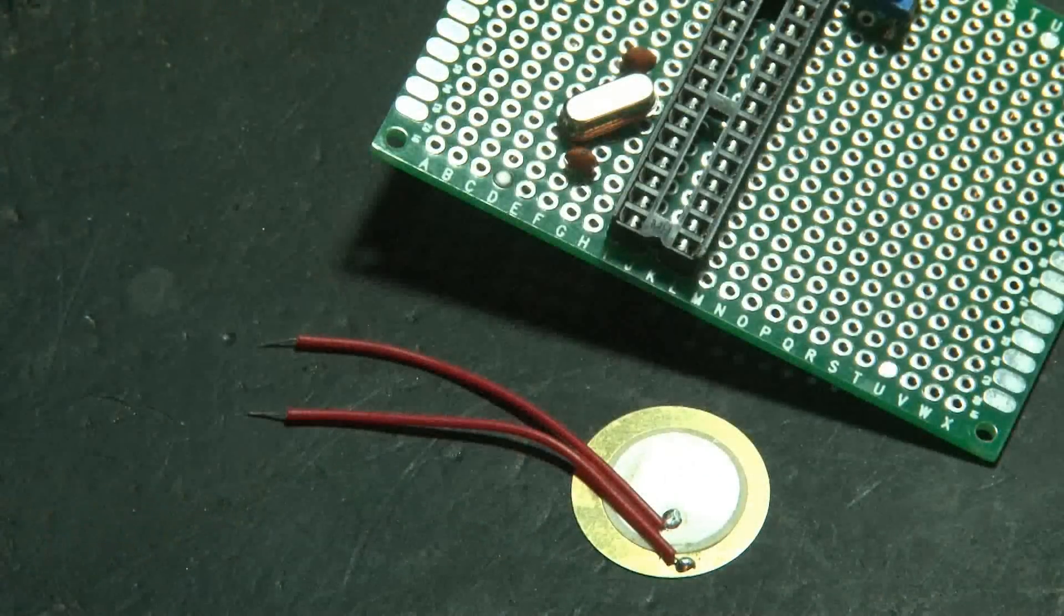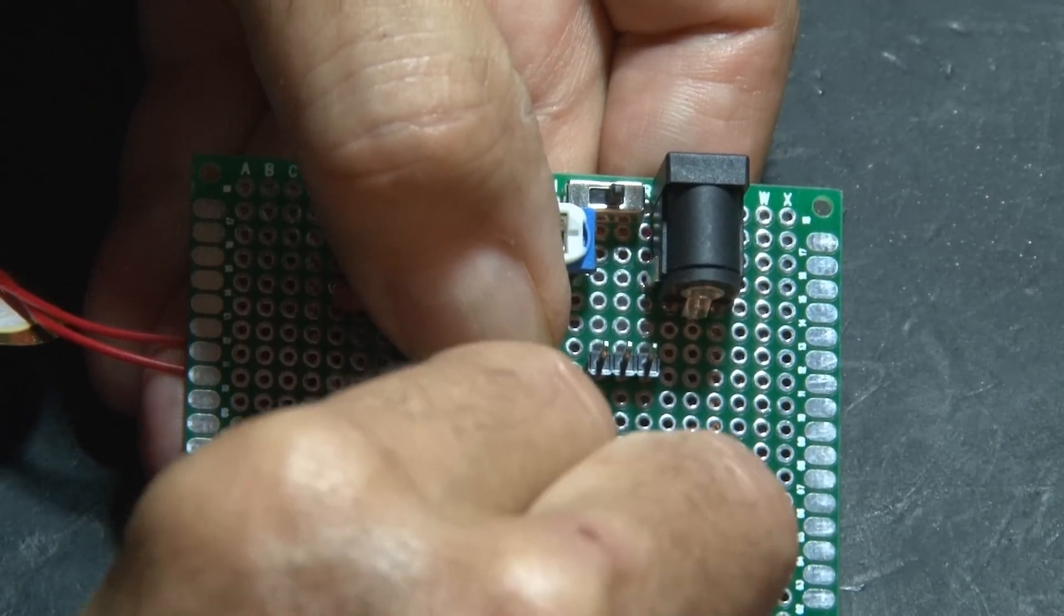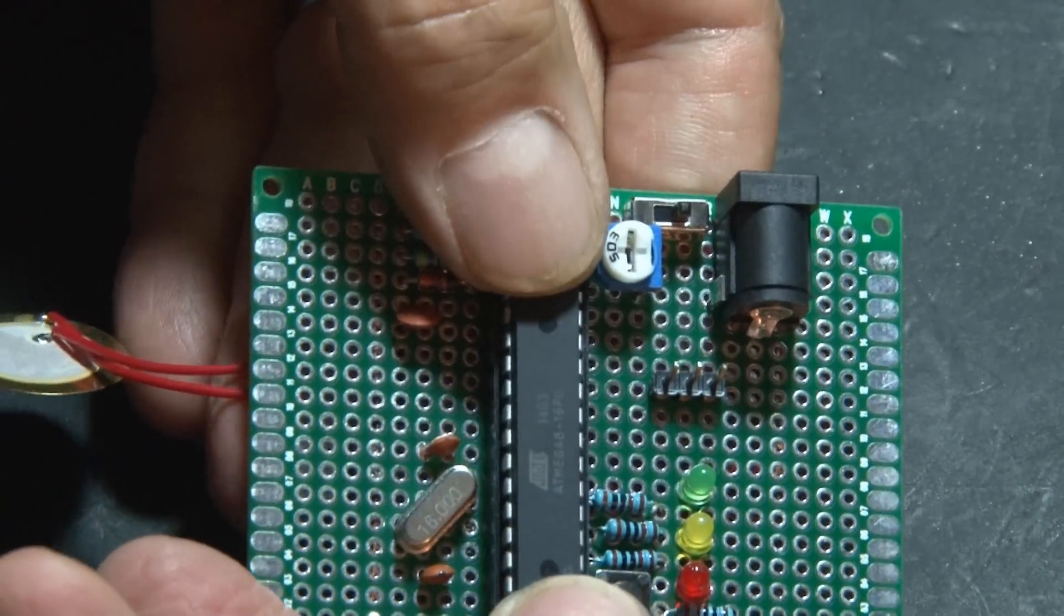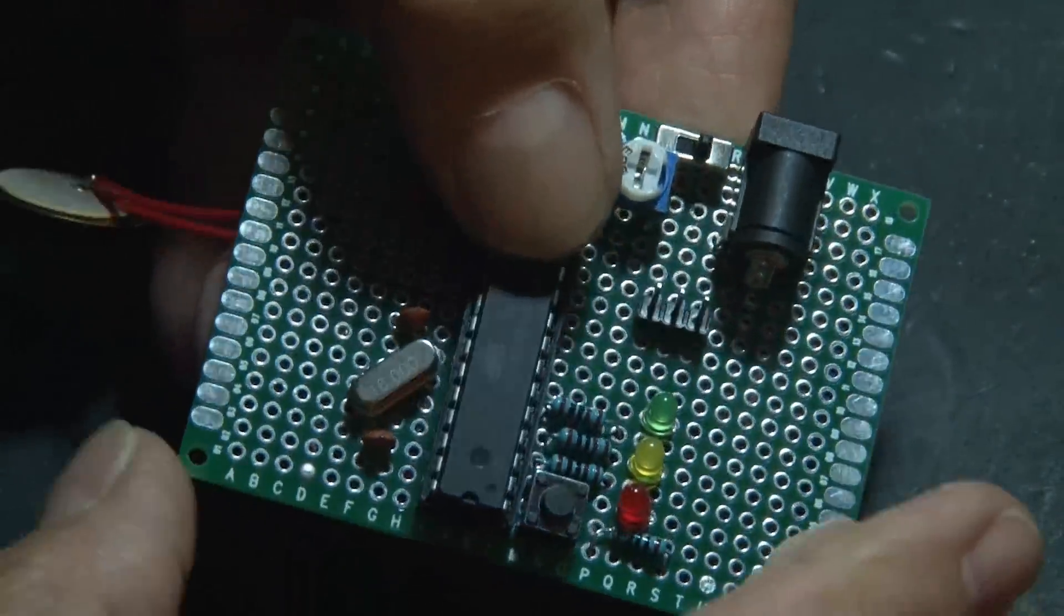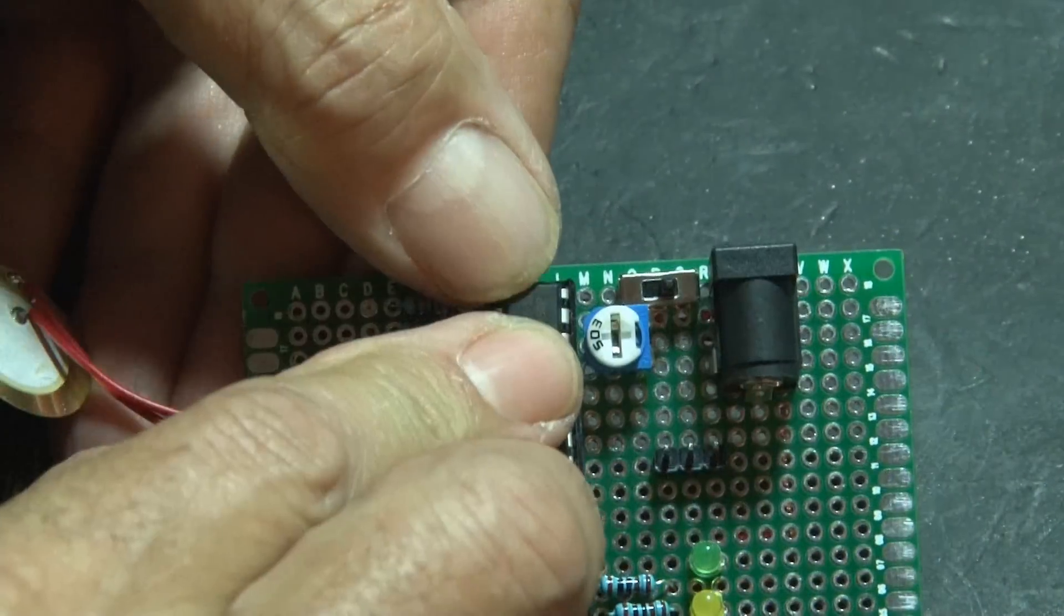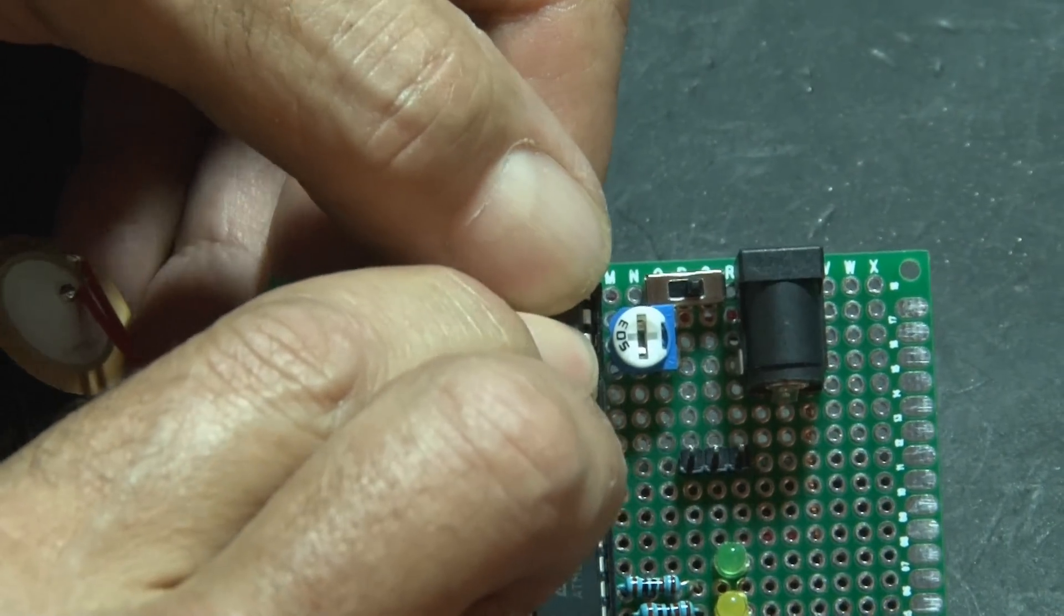The piezo element is one component, and that's what's going to hear the knocks and allow the door to lock or unlock. Now once the circuit's done, the last thing to do is install the two chips. The ATmega8 microcontroller, make sure all those legs are straight, and push it in place. And then also the LM358 op-amp chip.